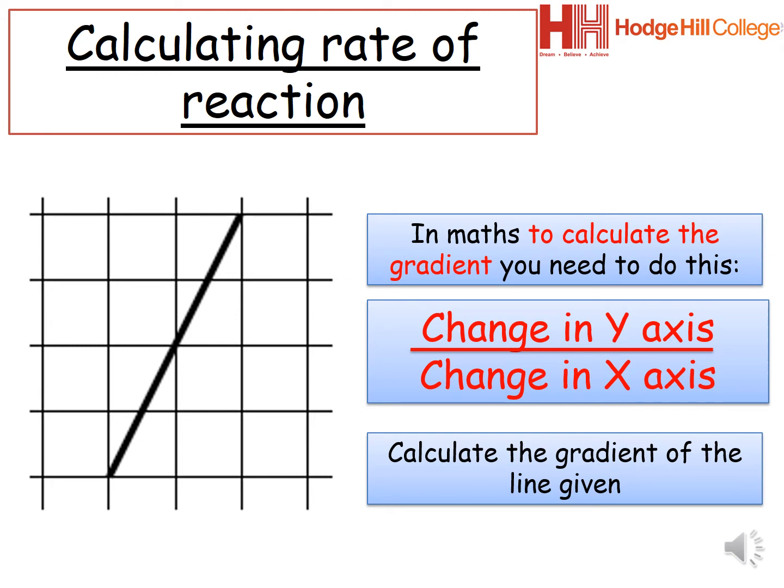Now, in this image, the change in the y-axis would be equal to 4. As you can see, we have 4 squares going down on our y-axis. The change in the x-axis would be 2, as we have 2 squares going across where it meets the line. To calculate the gradient, you divide 4, the change in the y-axis, by 2, the change in the x-axis. So your gradient would be 2 in this example.